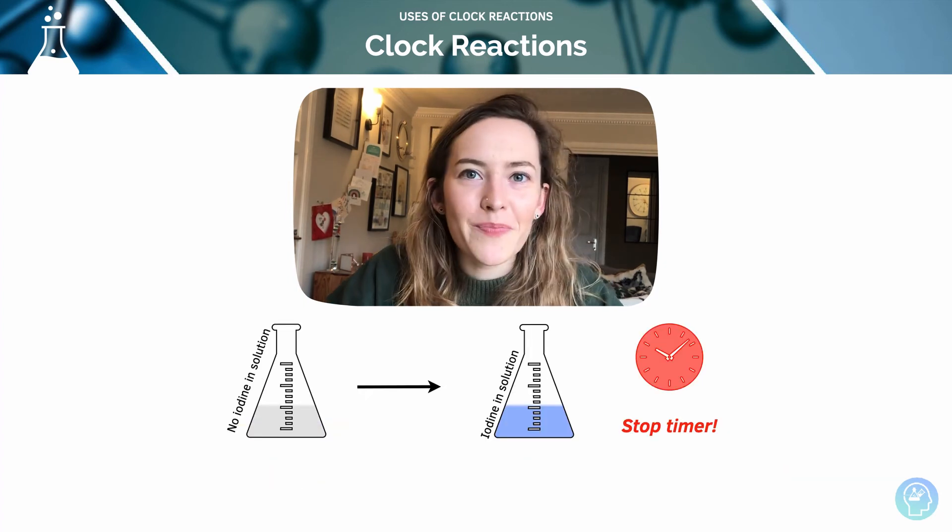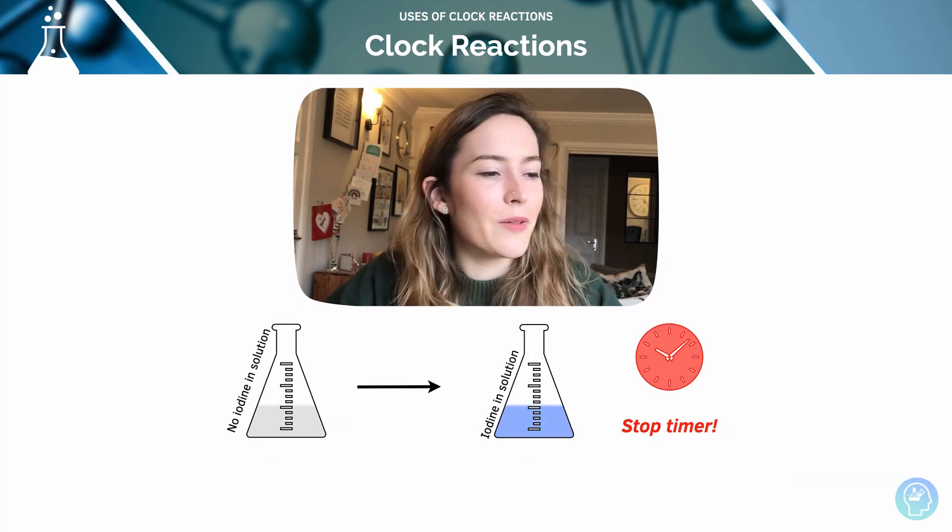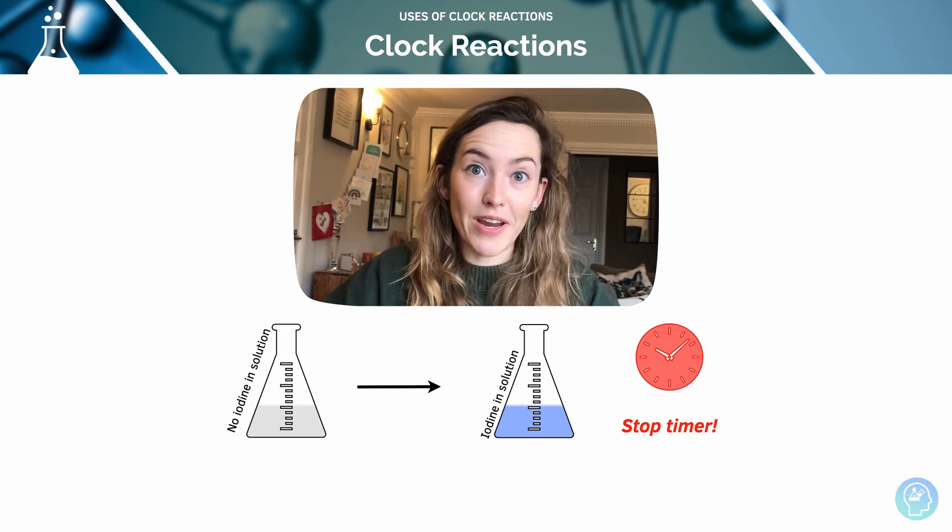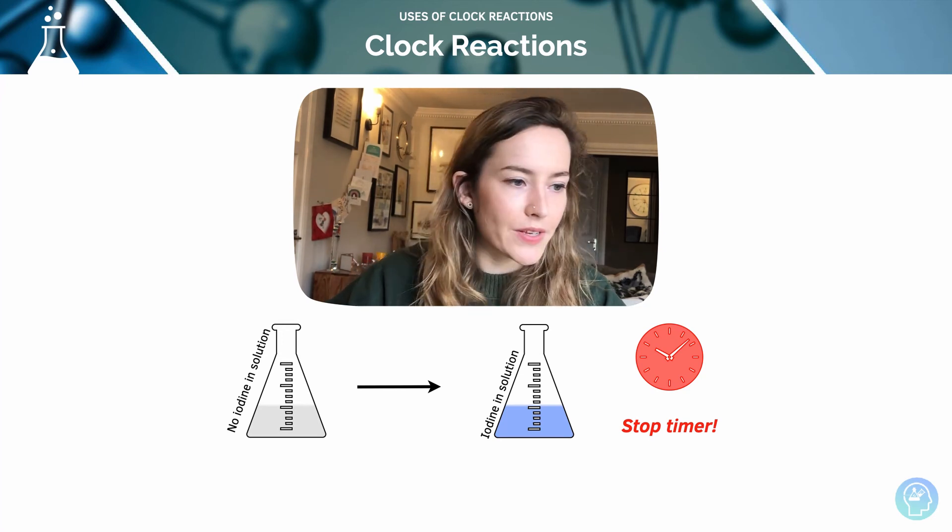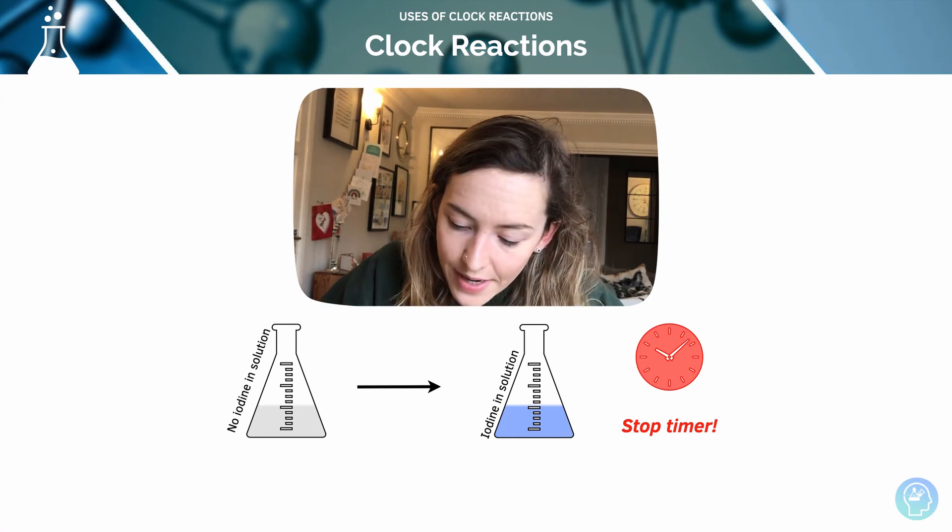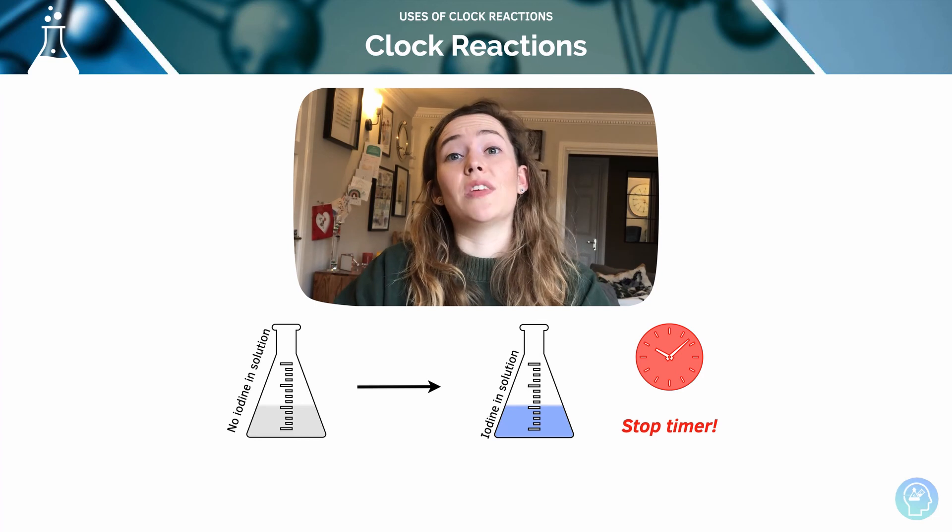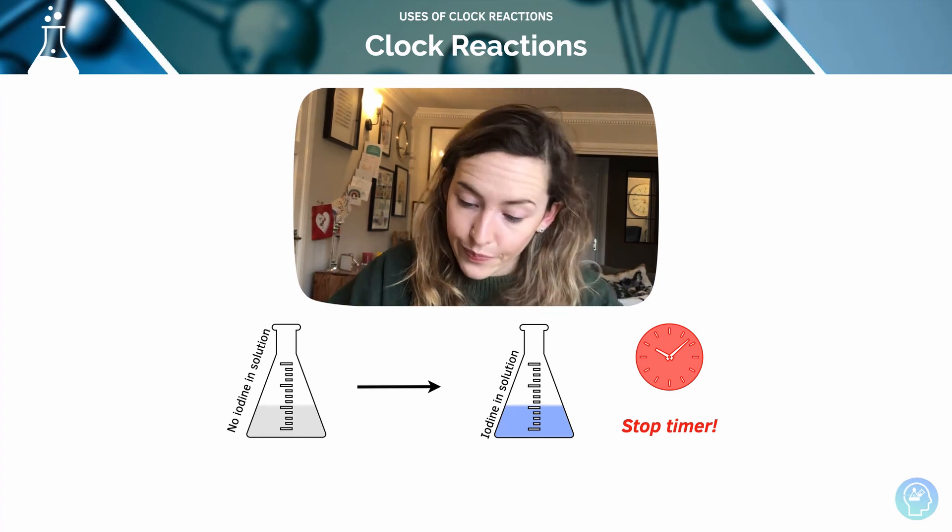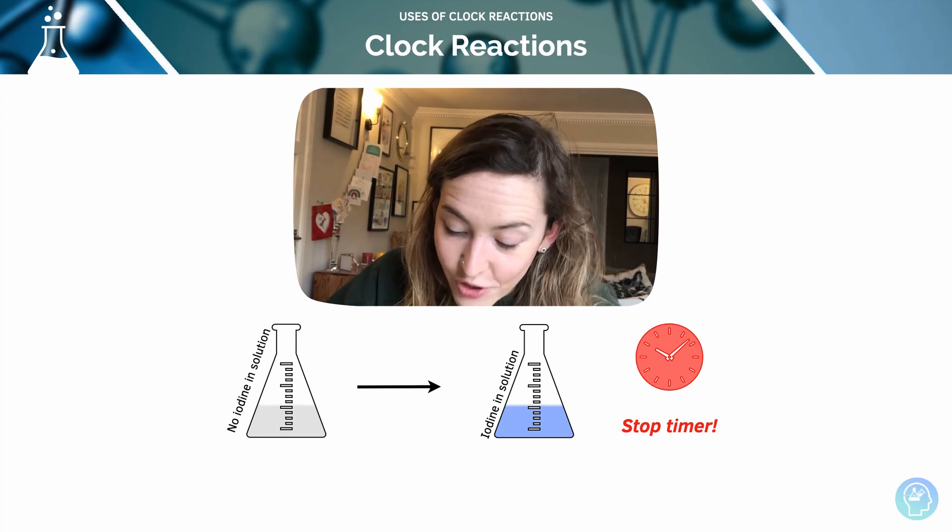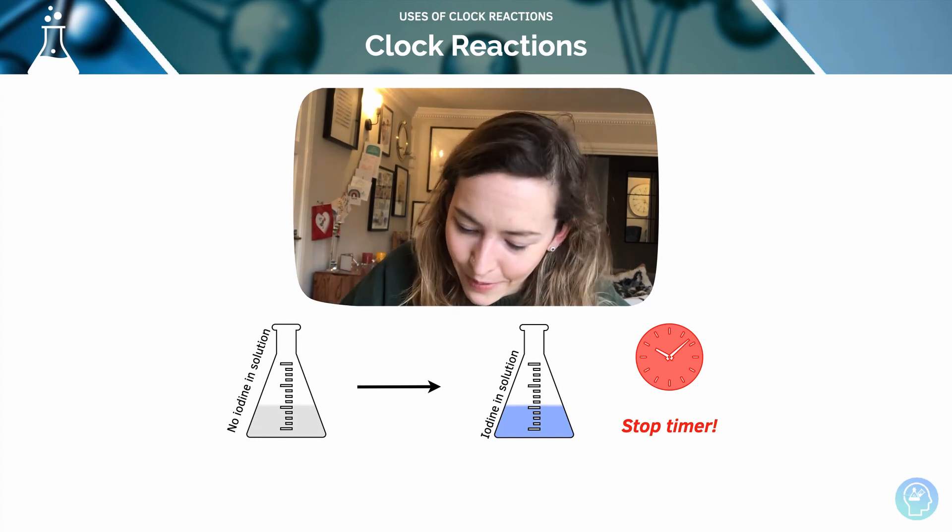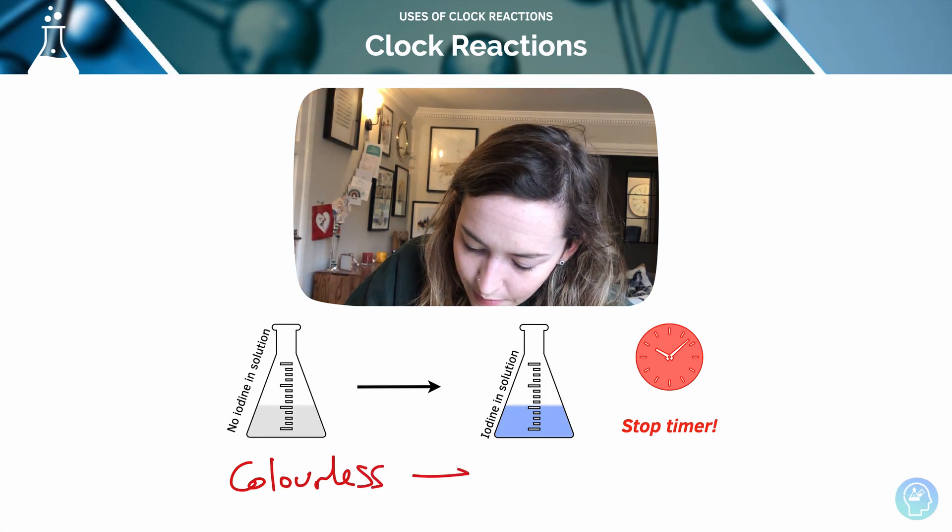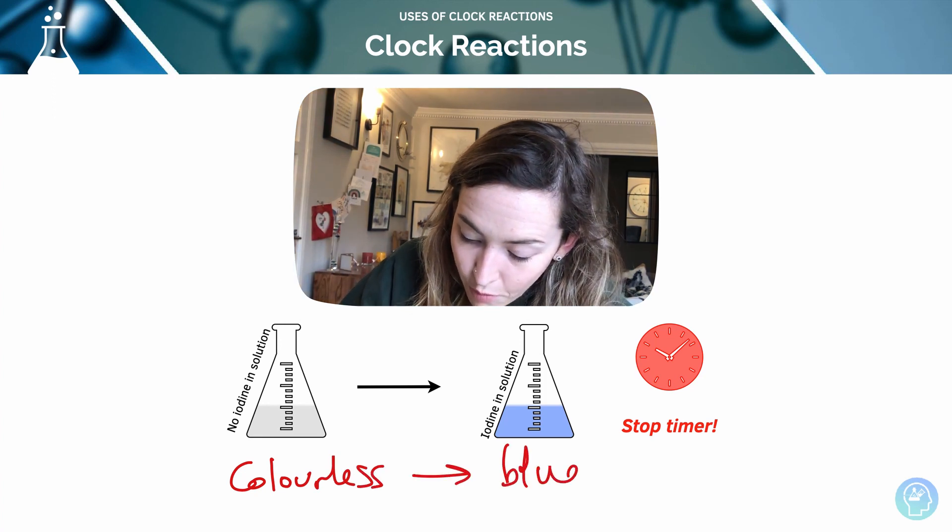So we've started the timer, when do we stop it? Step four of the iodine clock reaction is when the endpoint is reached. So how do we know when we've reached an endpoint? As the thiosulfate ions get used up, the iodine stays in the solution, and that causes it to start turning blue again, because it was blue before. And then we're going to stop the timer when we see this happen. So we're going from colorless to blue, or back to blue.